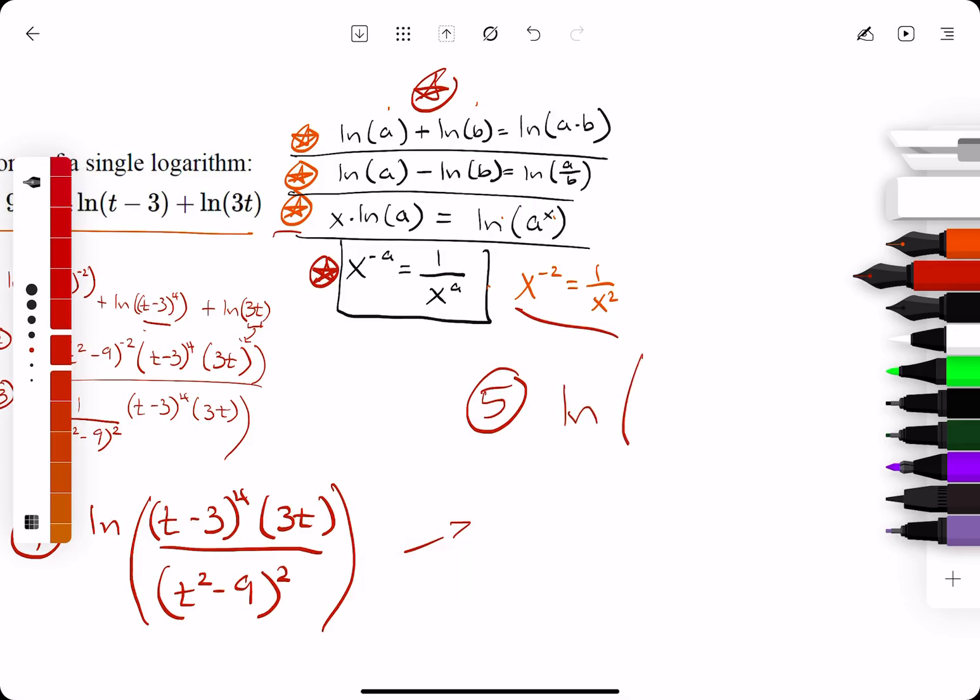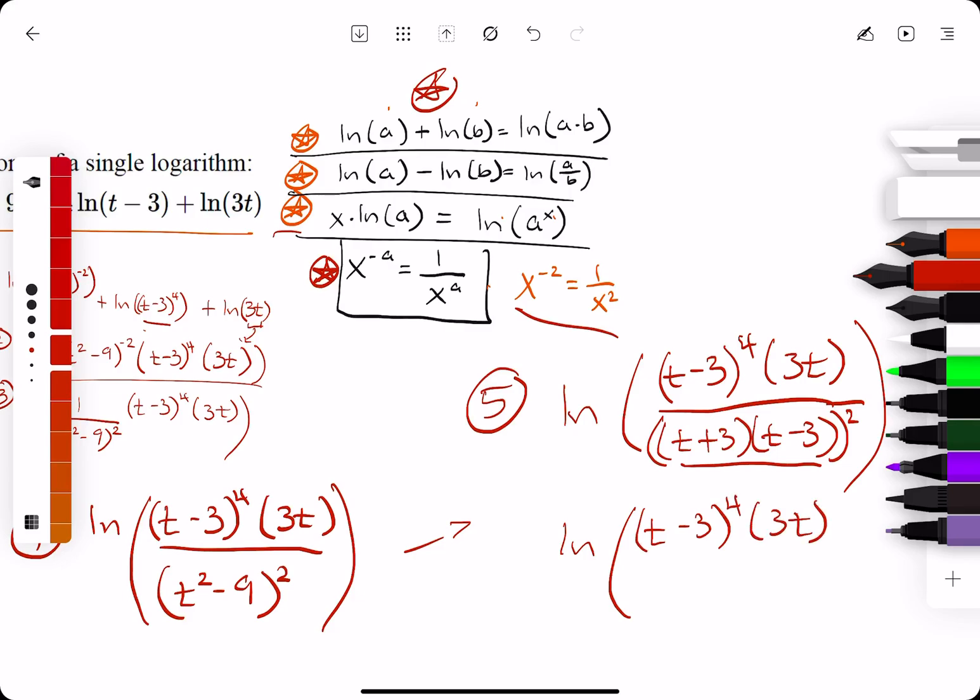On the bottom here, we have ln of, we can leave everything the same up top, which is nice. We have 3t. And, on the bottom, the t squared minus 9 can actually be factored into t plus 3 and t minus 3. And, since t squared minus 9 is equivalent to these two, but if t squared minus 9 was squared, then that means all of this must also be squared. Which means that this is equivalent to t minus 3 to the fourth times 3t over t plus 3 squared t minus 3 squared. So, since the entire t squared minus 9 was squared, that means each of its factors must be squared too.